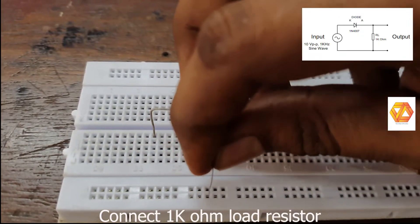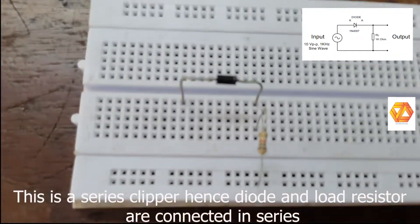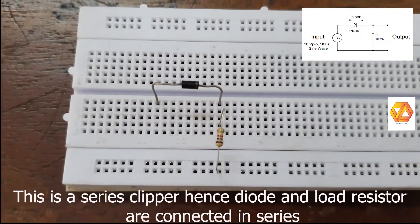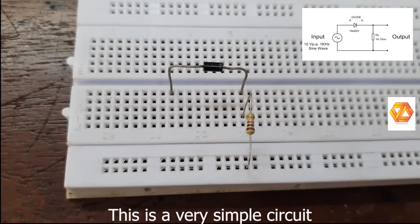This clipper circuit removes the negative portion of the input waveform, that's why the name negative. The diode and load resistor are both connected in series, that's why it is called a series clipper.